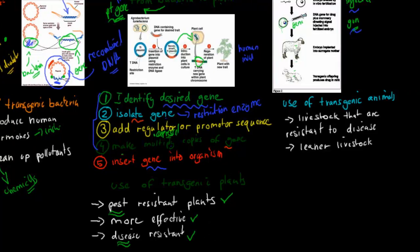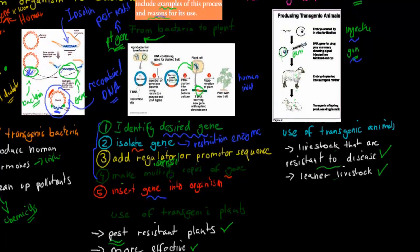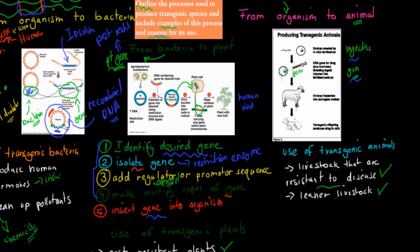For transgenic animals, we can have livestock that are resistant to disease. We can also have leaner livestock or change all kinds of things, making them more effective at producing our products.